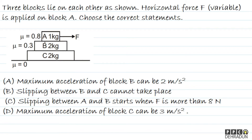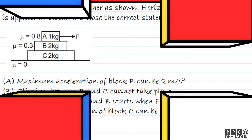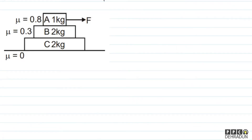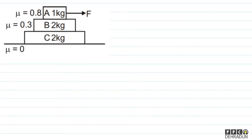There are three blocks: 1 kg, 2 kg, and the lowest 2 kg. Between A and B the friction coefficient is 0.8, between B and C it is 0.3, and between the ground and C the friction coefficient is 0 — meaning the surface is smooth. Now let's think about this question. Force F is applied on the 1 kg block.